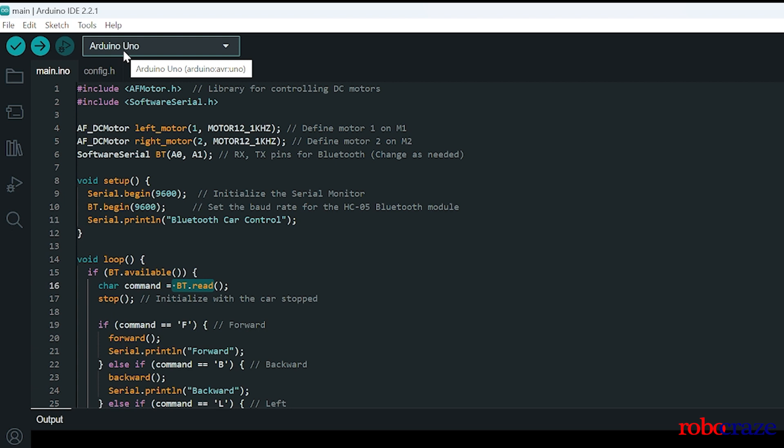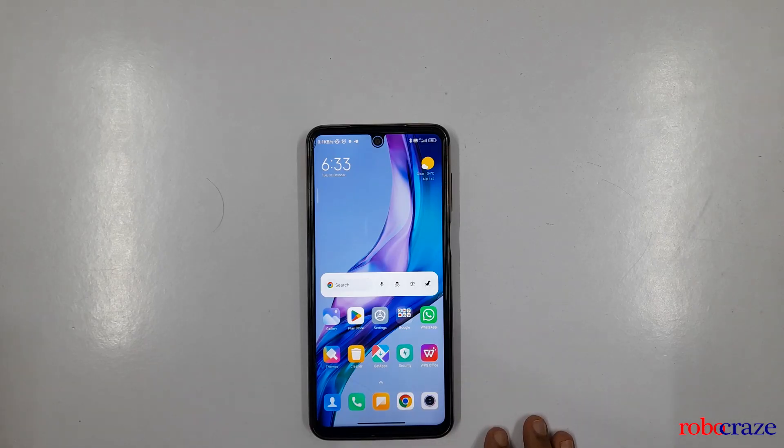After copying the code and pasting it, go here, select Arduino Uno and the code whichever is available, verify the code and then upload it. As soon as you have uploaded the code, your bot is ready to use.